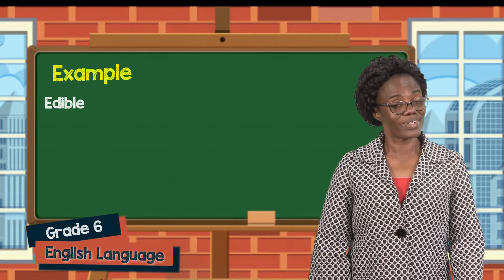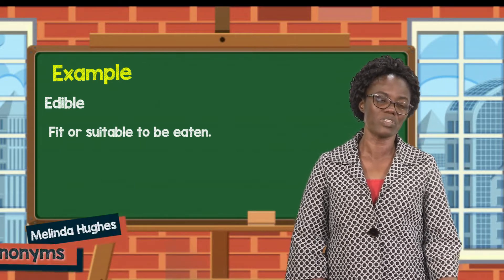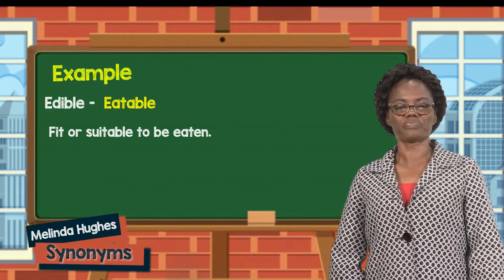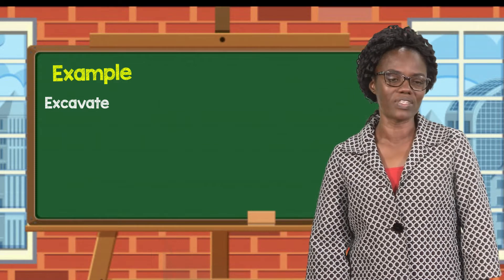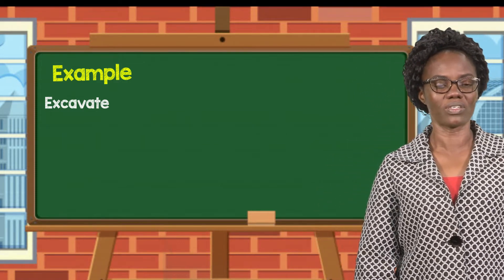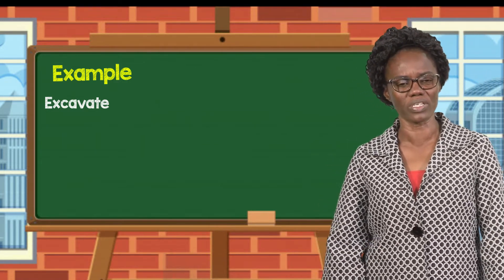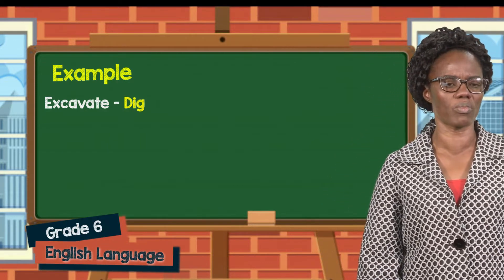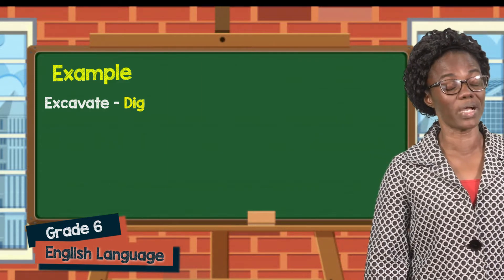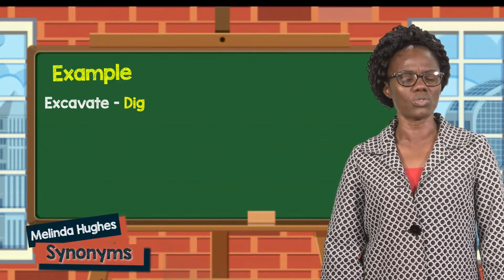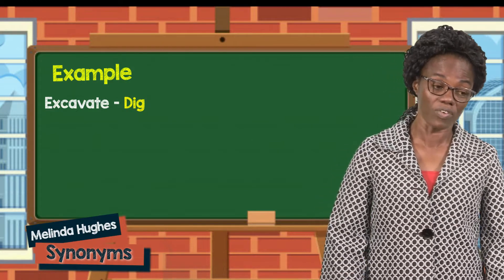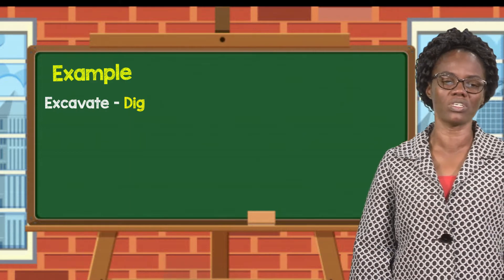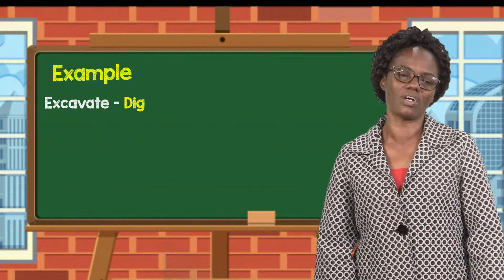Edible — we have some plants that are edible, meaning that we can eat them or they can be consumed. Next, we have the synonym excavate — excavate simply means to dig. We can use this word if we want to talk about those who are doing mining in the interior, those who dig for gold or diamond. The better word to use is excavate, especially if big machineries are involved.